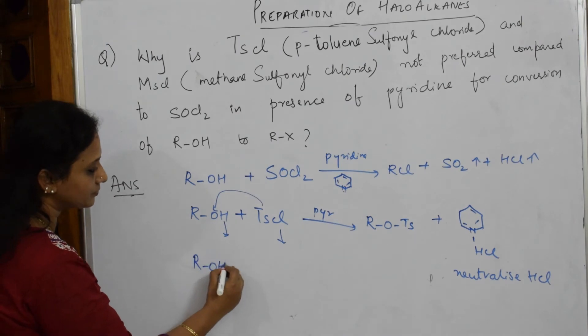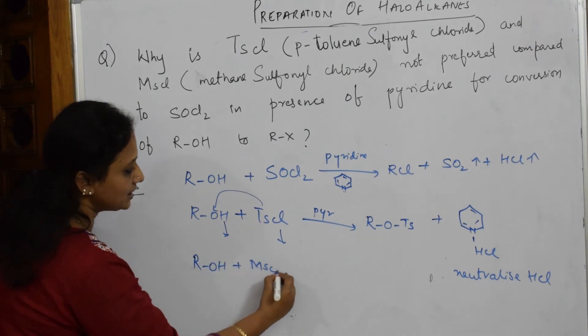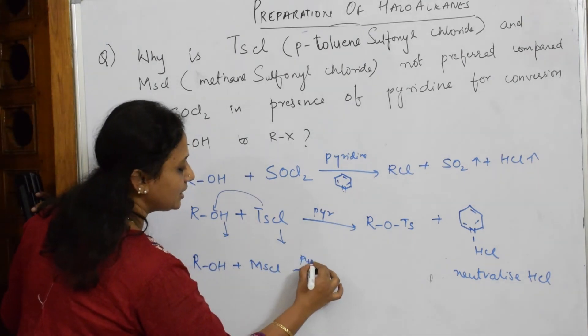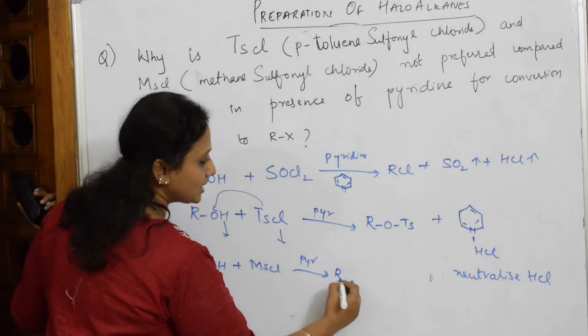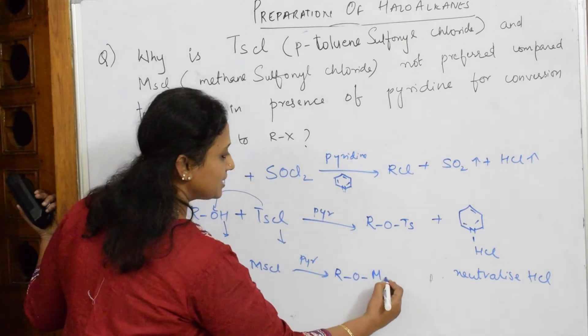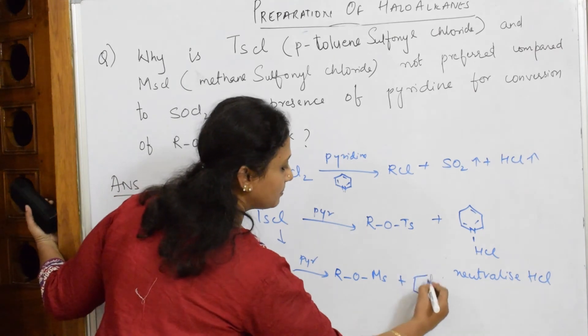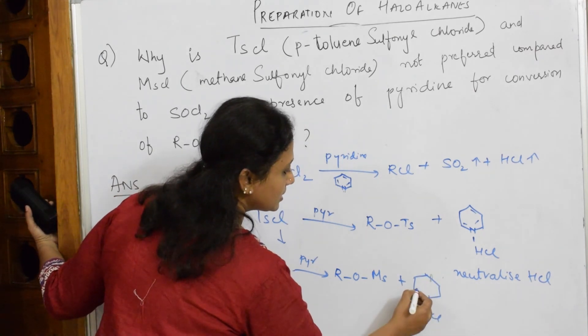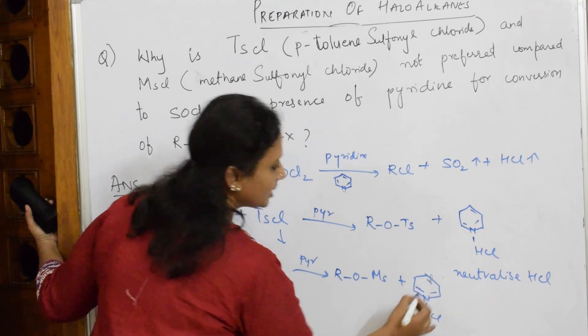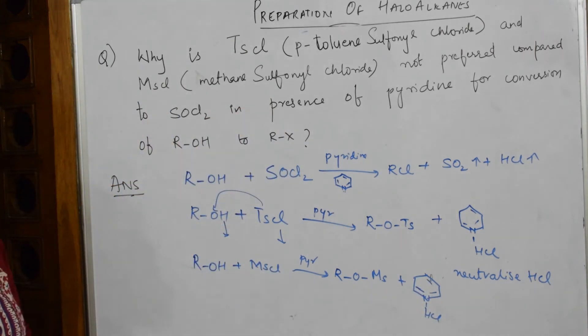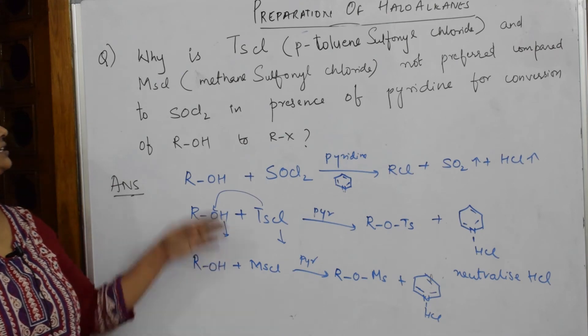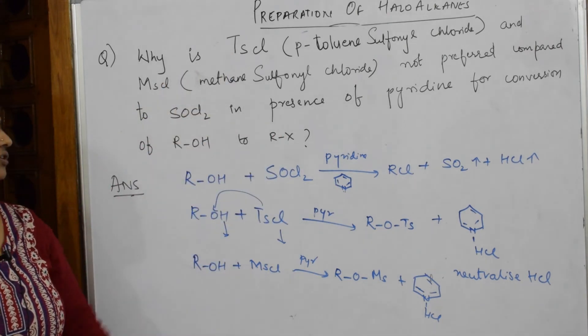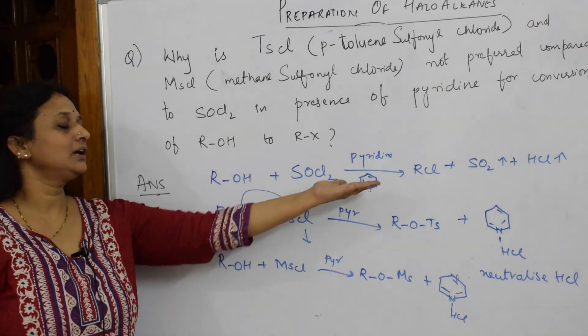Let us see with MSCl. ROH plus MSCl again in the presence of pyridine. Remember, pyridine very important. So it's going to get ROMS plus, and your pyridine is going to block that HCl and not allowing it to form the required product.